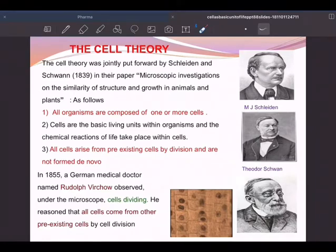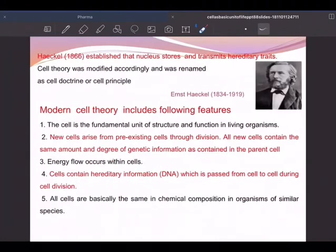All the cells are basically alike in their chemistry and physiology. In 1855, a German medical doctor, Rudolf Virchow, observed under microscope mitosis, cells dividing, and he reasoned that all cells come from pre-existing cells by cell division. Ernest Haeckel established that nucleus stores and transmits hereditary traits.